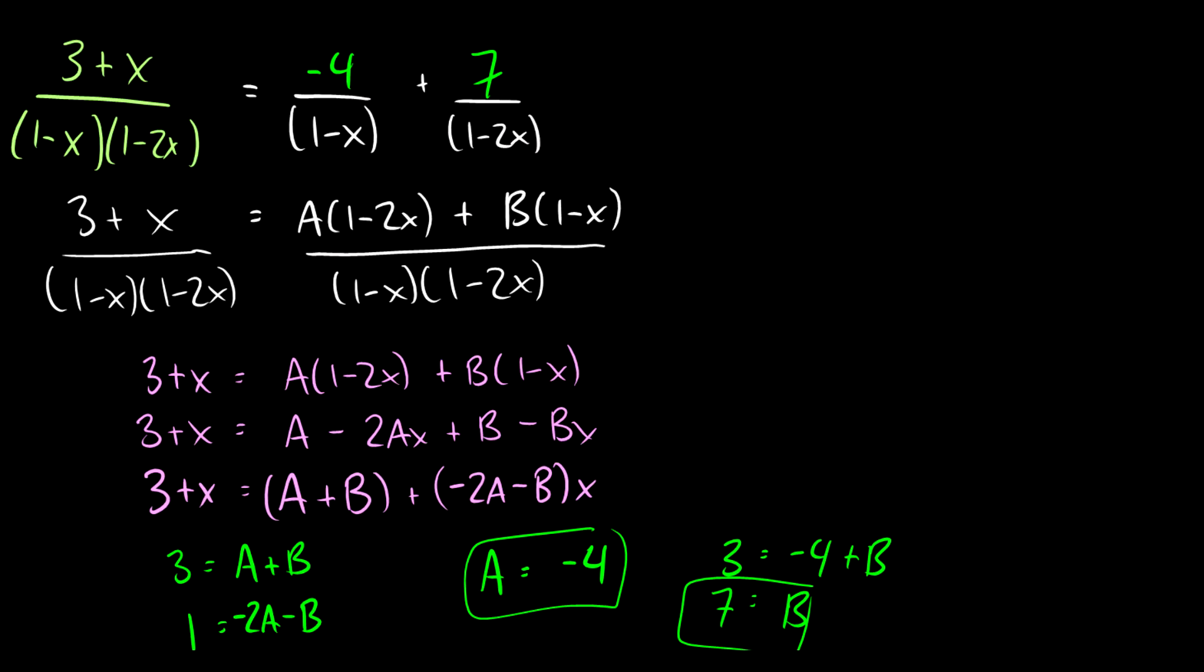Now what we can do to make sure we got the right answer is multiply them out and make sure we get the correct numerator. So we'll get negative 4 times 1 minus 2x plus 7 times 1 minus x all over 1 minus x times 1 minus 2x. Let's expand the top. We're going to get negative 4 plus 8x plus 7 minus 7x. And we can see this is the same thing as 3 plus x. So we did it right. And that's a good way you can check. So on an exam, if you have extra time, definitely check to make sure you're right because that's going to save you a lot of marks.